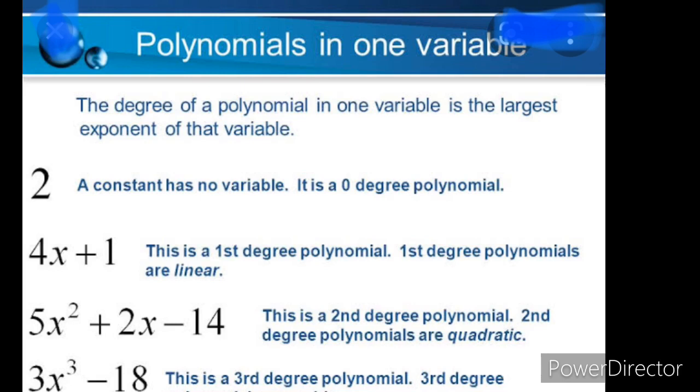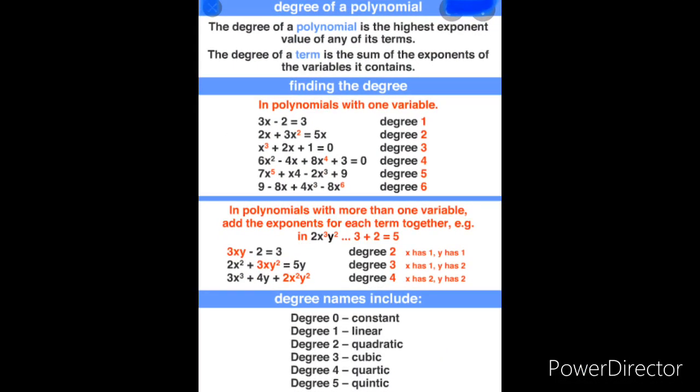4s plus 1, a first degree polynomial. 5x² plus 2x minus 14, that is second degree polynomial because the power is 2. And the third is the third degree. Power is 3. See the next, what is the degree of a polynomial with an example, please read it, pause it and you can see the highest exponent value is called your degree.